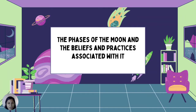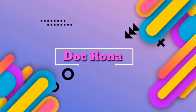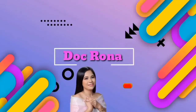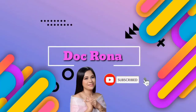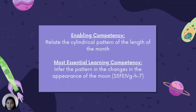Our lesson for Week 5-6 is about the Phases of the Moon and the beliefs and practices associated with it. Our enabling competency is to relate the cyclical pattern of the length of the month, and the most essential learning competency is to infer the pattern in the changes in the appearance of the moon.